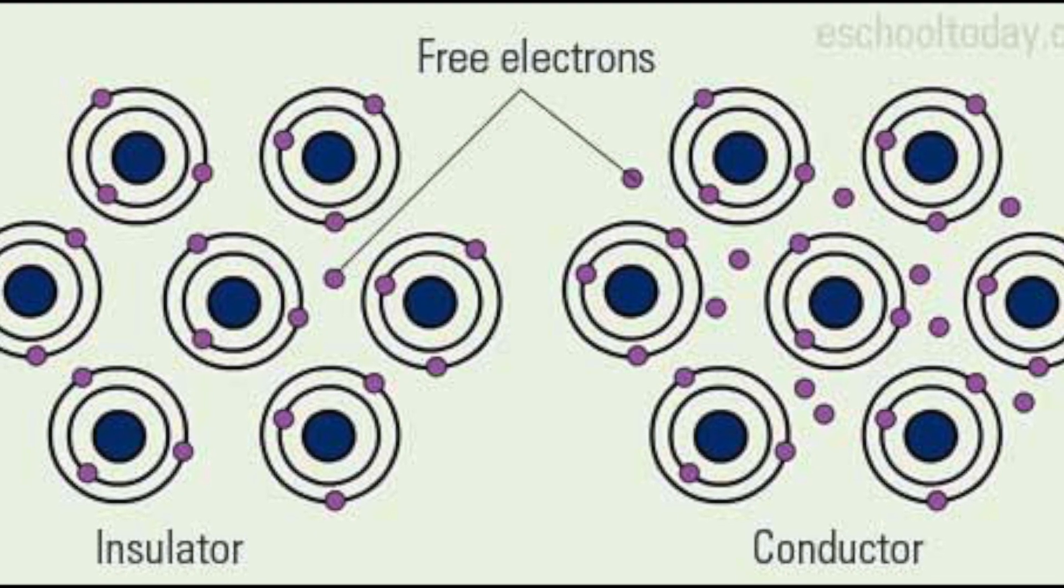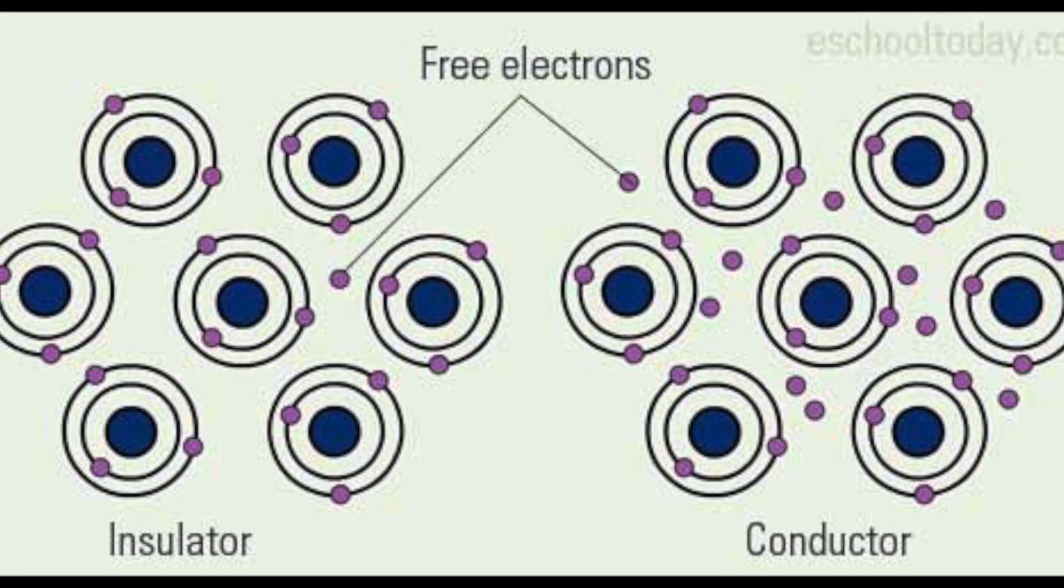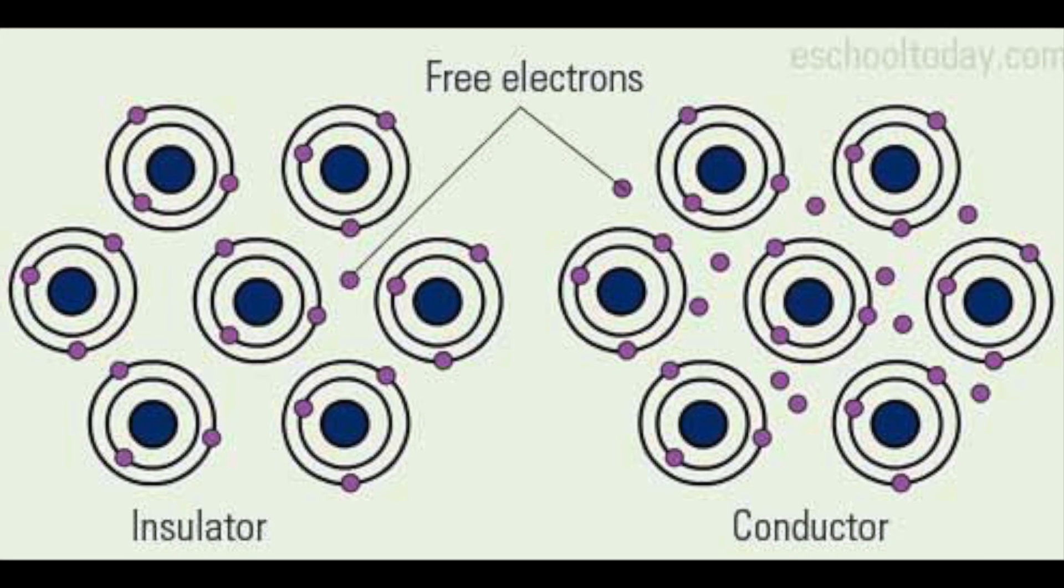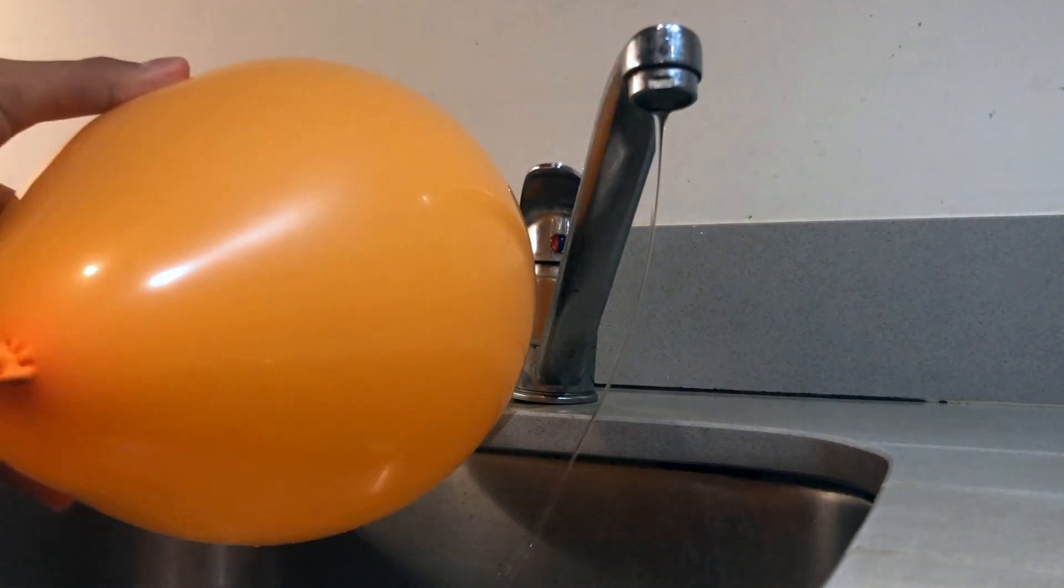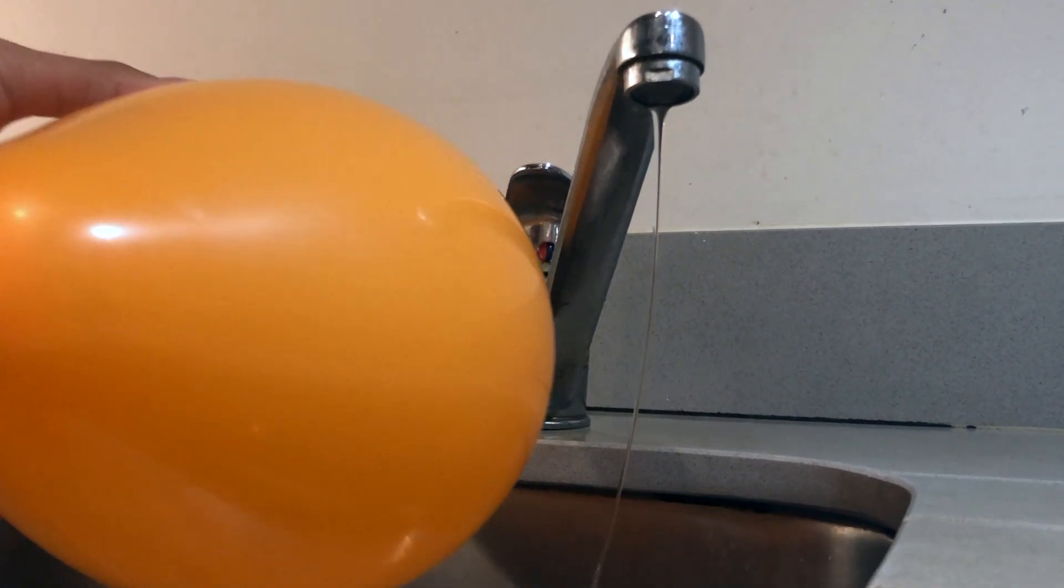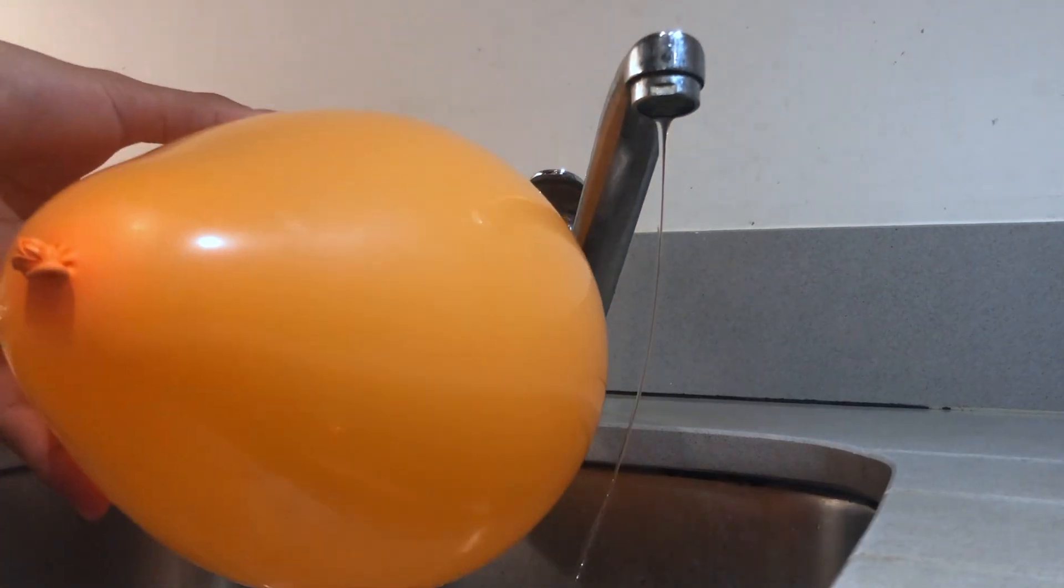On the other hand, balloons or plastics in general are insulators, so electrons have difficulty moving through them. When you bring the balloon to a stream of water faucet, water bends and is attracted to the balloon.